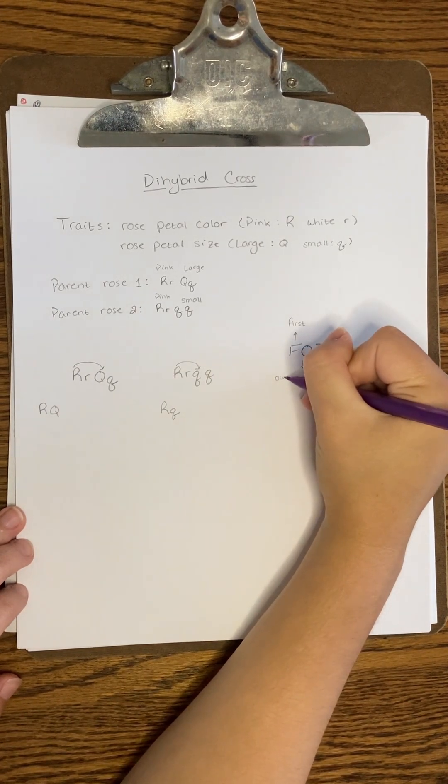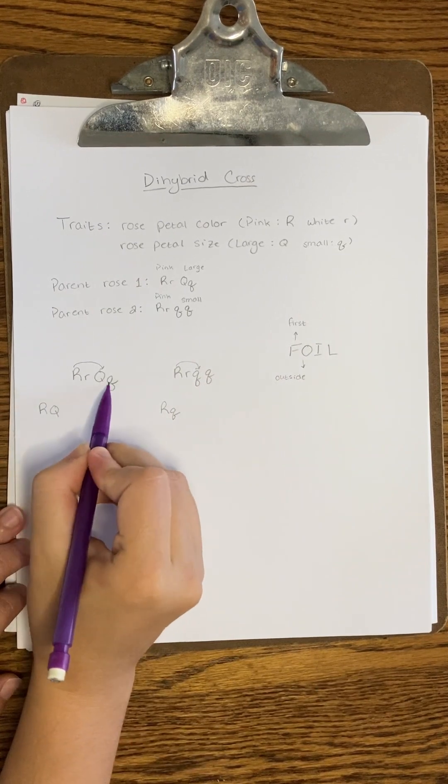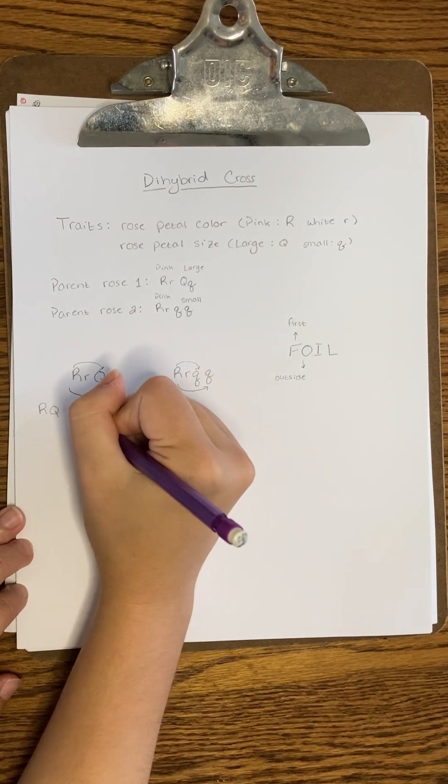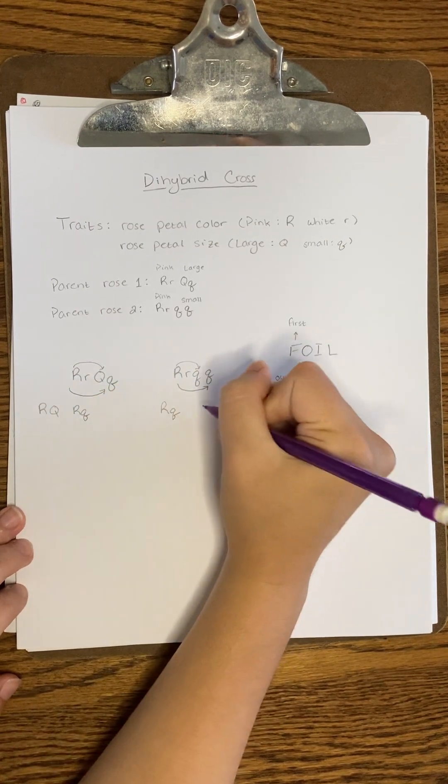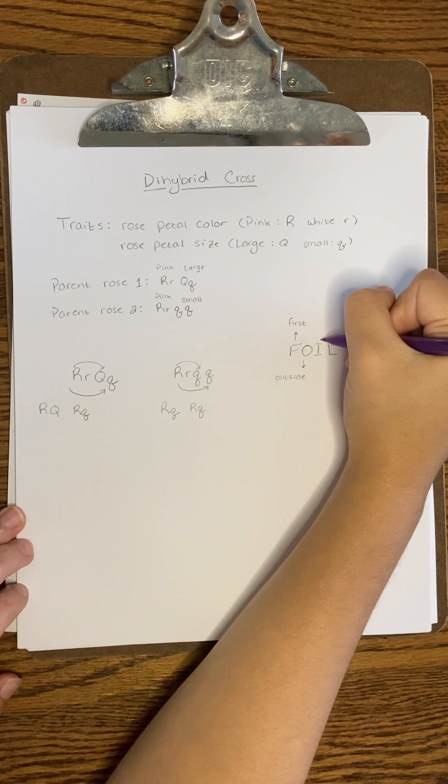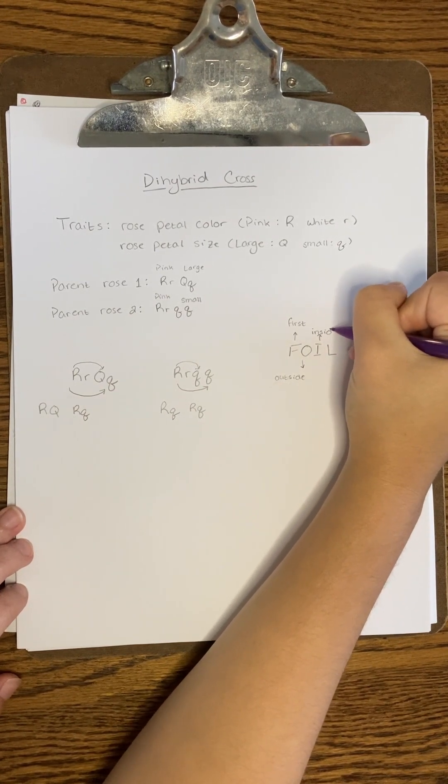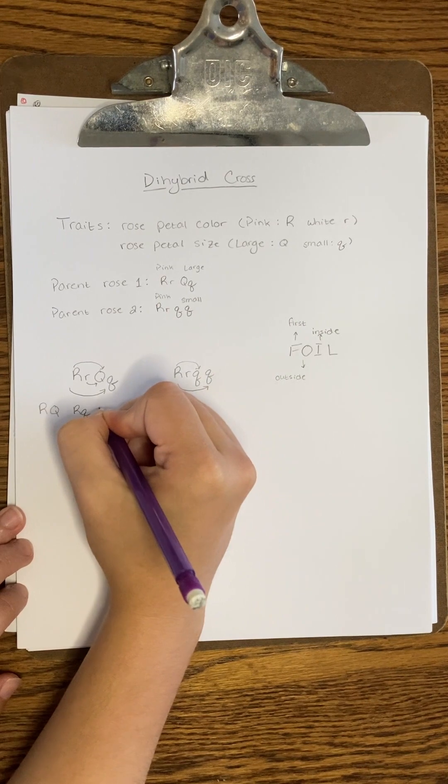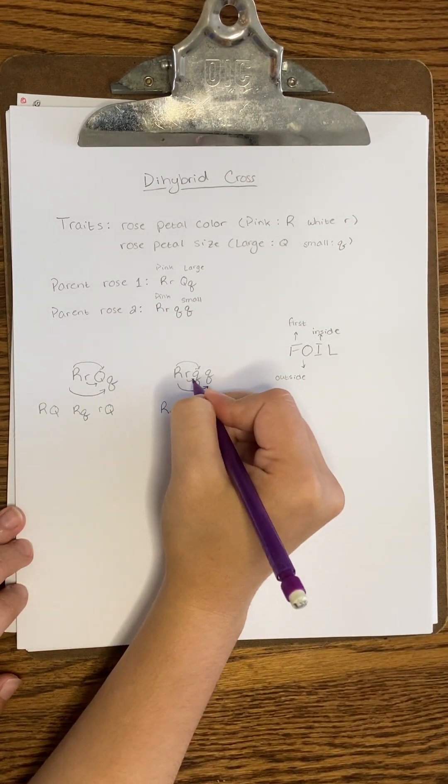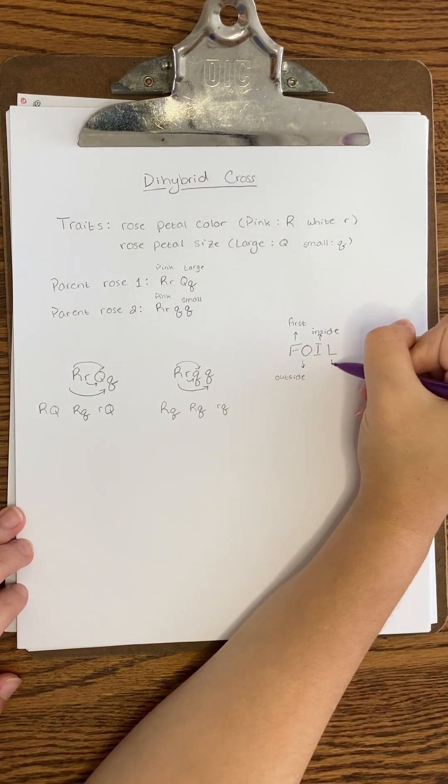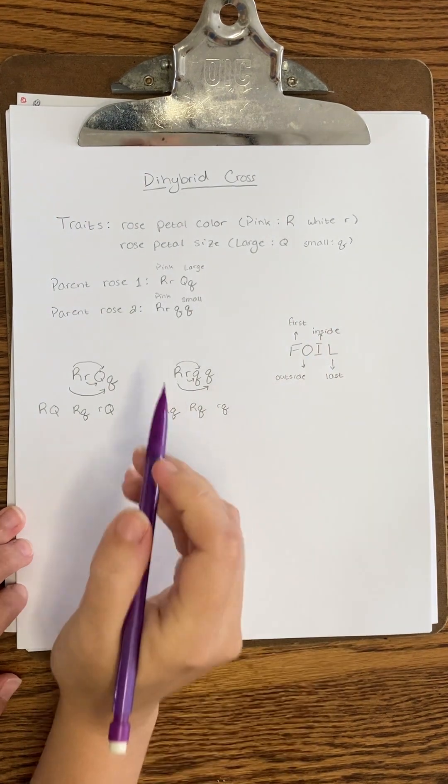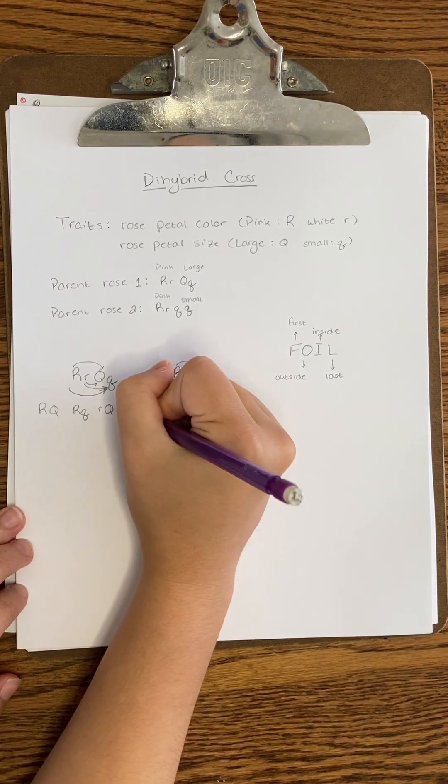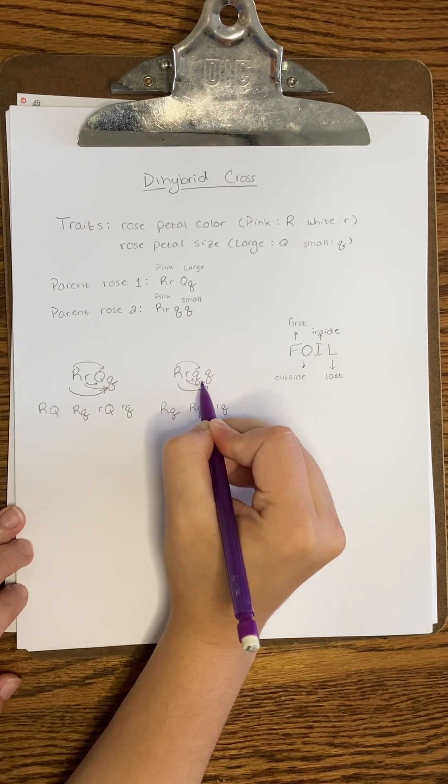I stands for inside, so we will combine the two inside alleles that show up for each parent. For parent one, this will be lowercase r, capital Q, because we want to keep the first letter consistent each time, so it's okay to put the capital one second. And for parent two, it will be lowercase r, lowercase q. Finally, L stands for last, so we'll combine the last of each allele that show up for each parent. For parent one, that would be lowercase r, lowercase q. And for parent two, it's also going to be lowercase r, lowercase q.